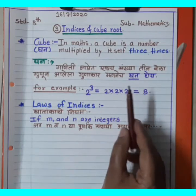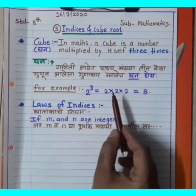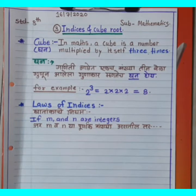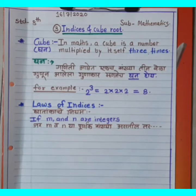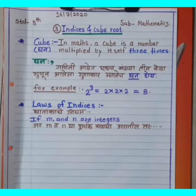So that was the example of a cube. In summary, the product obtained by multiplying a number three times is called its cube (ghanav). But today we are going to learn the Laws of Indices.